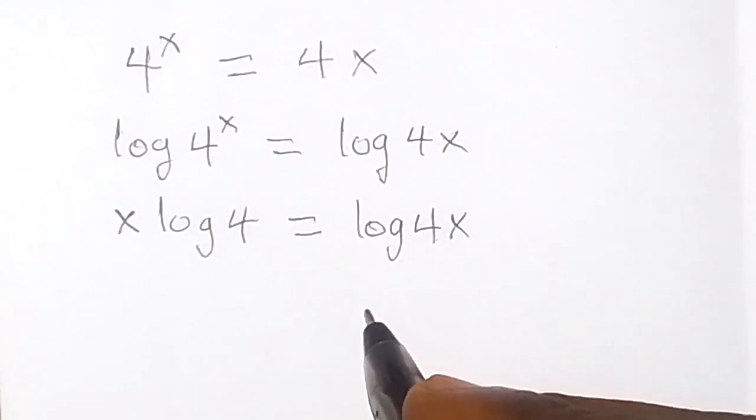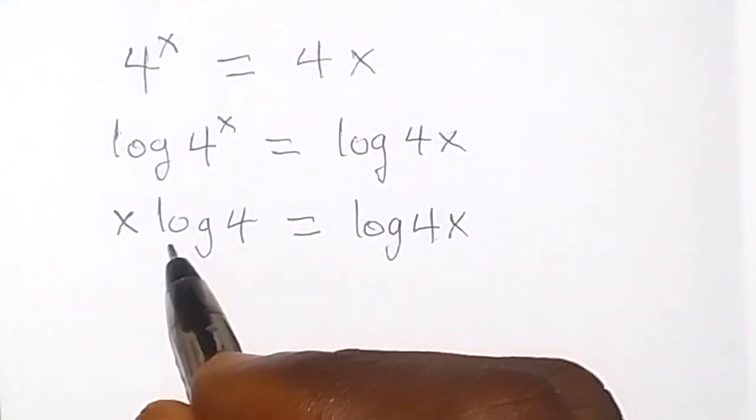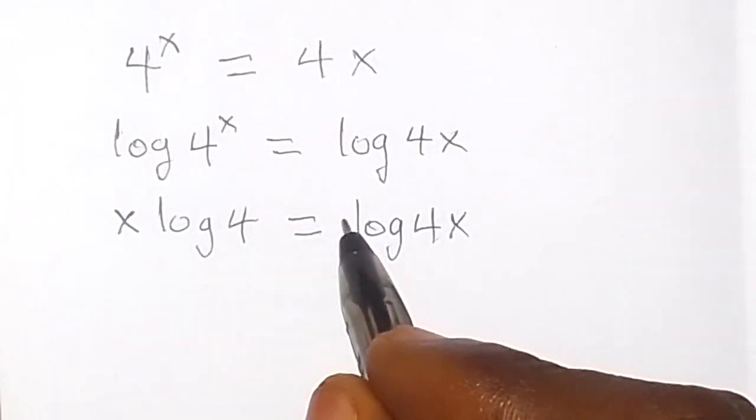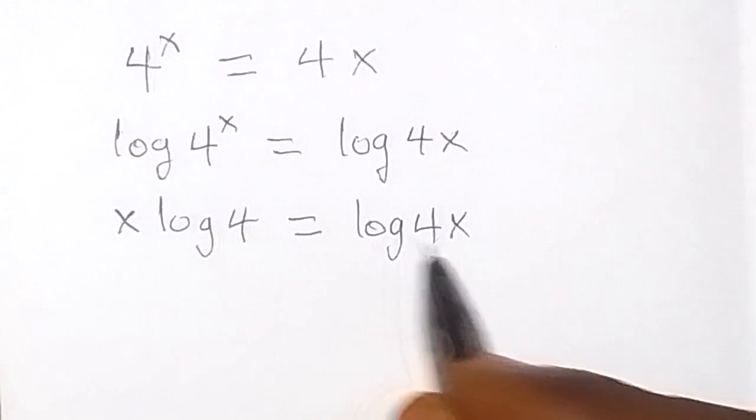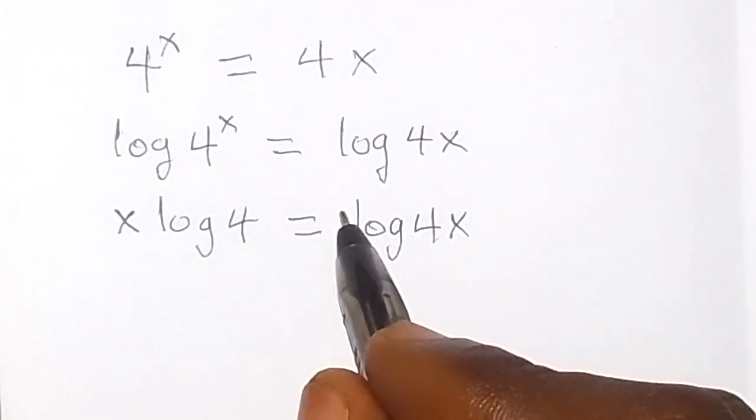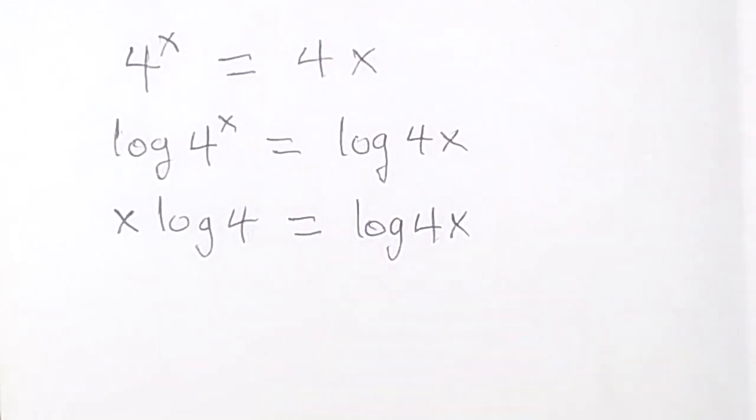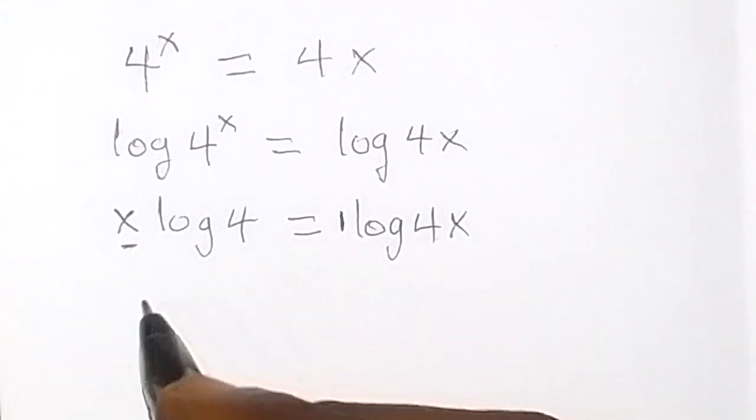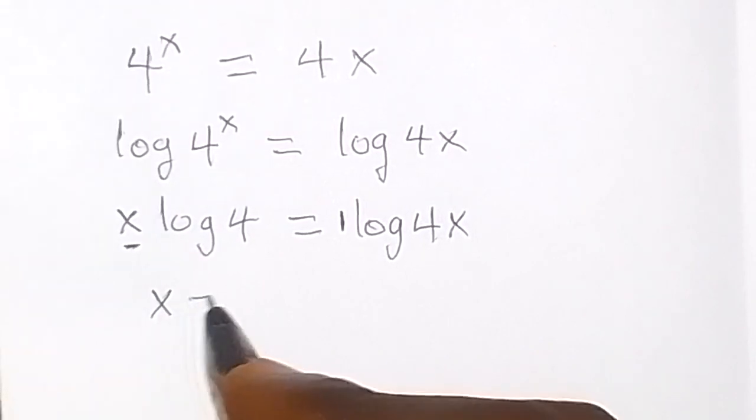Let's compare the coefficient here. The coefficient here is 1, the coefficient of this log is 1, because when we don't write anything there it means that a 1 is here. And also here we have x, so let's equate the coefficient. That x now equals to 1.